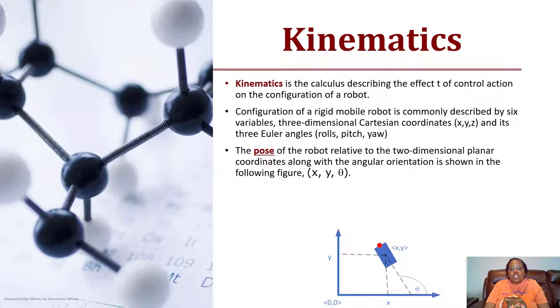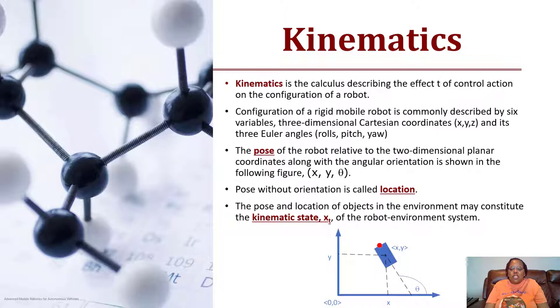The pose is the robot's relative position in a two-dimensional plane or coordinate along with the angular orientation, as we've already described before as x, y, and theta. Whereas if we were talking about just the robot's location, that is the same as the pose without orientation, so that would just be x comma y. The pose and location of objects in the environment may constitute the kinematic state x_t of the robot-environment system, so the state may not only include how the robot's moving through the world but how the world is changing or being affected by the robot as it moves through the world.